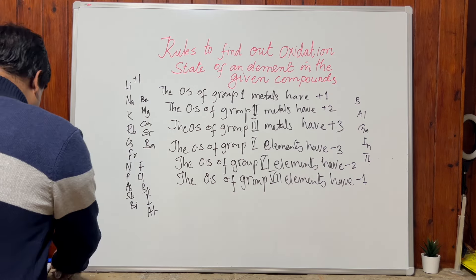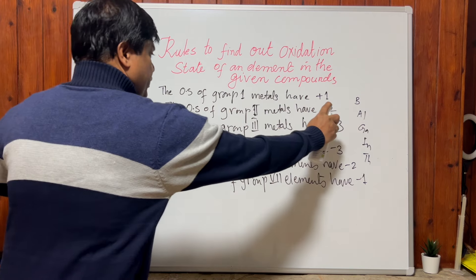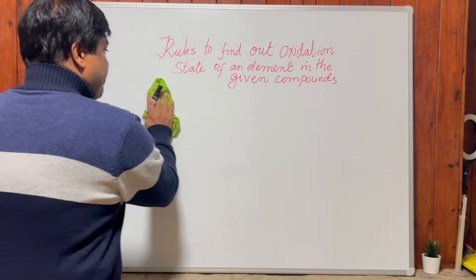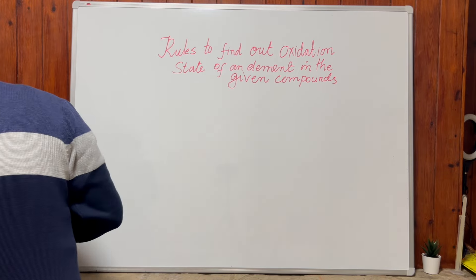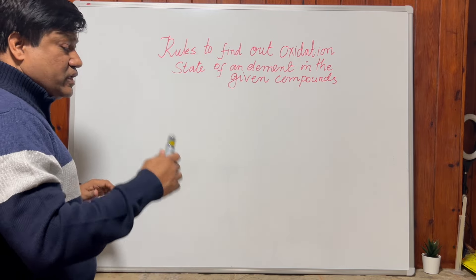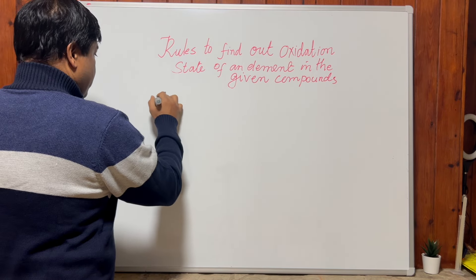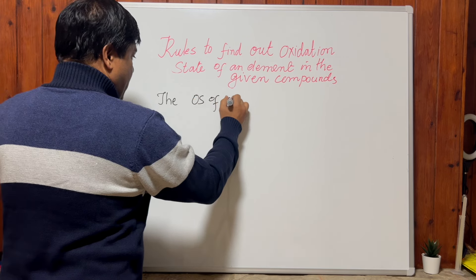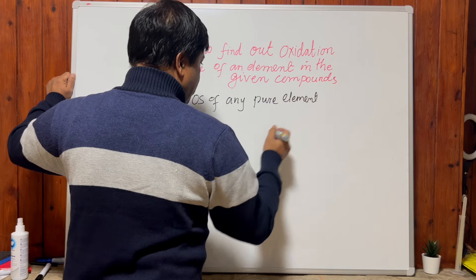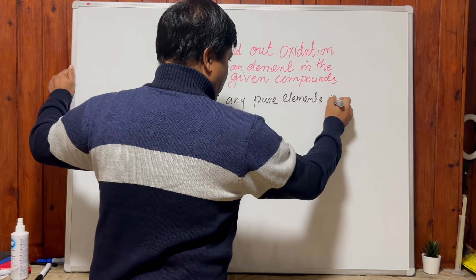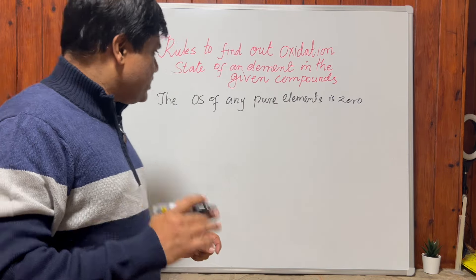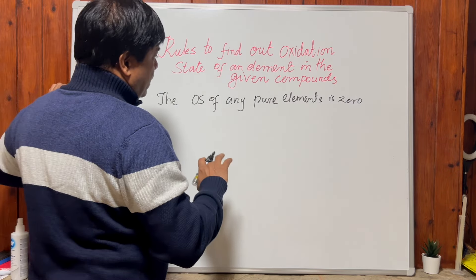Now I have some more rules to work out the oxidation state of any element in its given compound. The oxidation state of any pure element is zero, because it is in its pure form — its original state — and it is not making any bond.